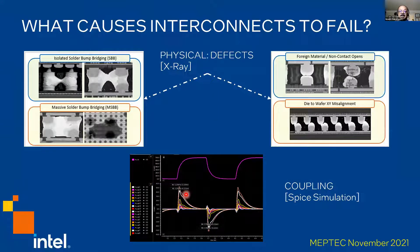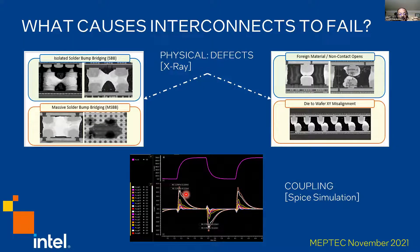Now let's look at what causes these interconnects to fail. I'm showing a couple of X-ray images from one of our products. On the top left, we see two bumps which cause two adjacent signal lines to get shorted — what we call isolated solder bridge bridging faults, a single two-lane short.